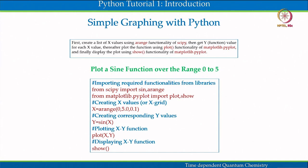Welcome back to Python Tutorial 1 of the course Time Dependent Quantum Chemistry. In this Python tutorial, we are going over different techniques for scientific computing and slowly nudging ourselves toward the computation required to explore time dependent quantum chemistry. So far we have gone over simple computation and arithmetic computation, then how to use different mathematical functions in Python. In this session, we will go over simple graphing tools — how to plot a mathematical function for visual inspection.